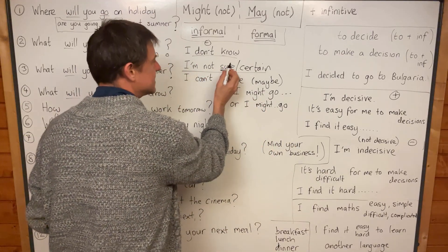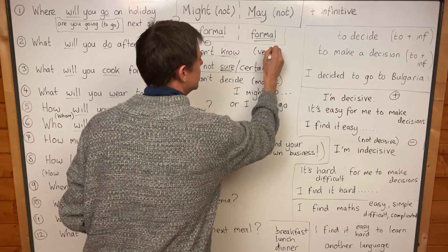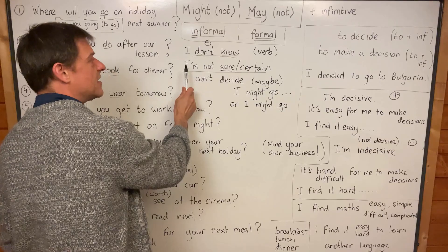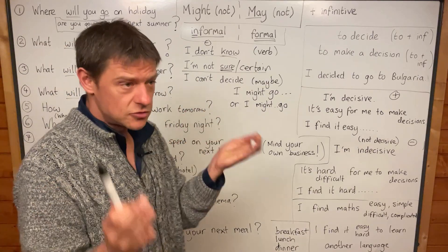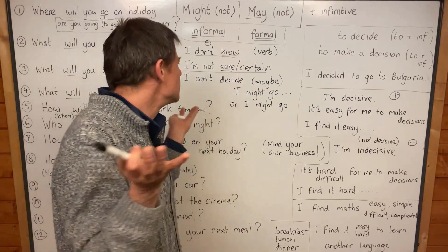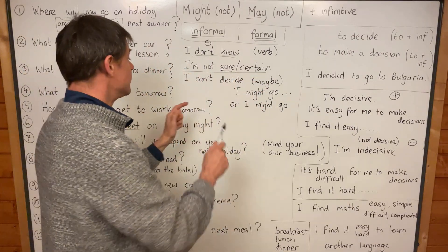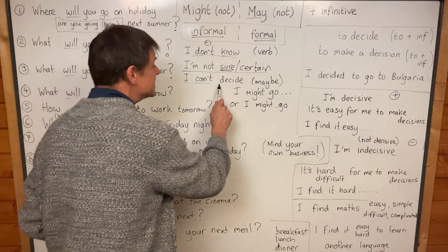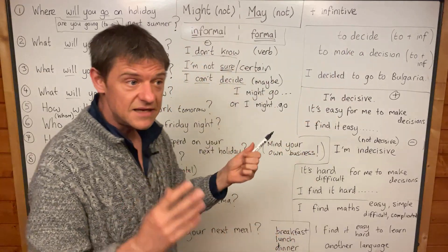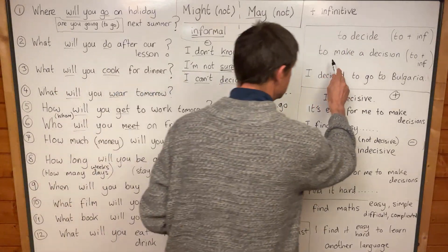Sure is an adjective, which is why it's I am sure — a hundred percent, I know. Or I'm not sure, I don't know, I'm not certain. Also, I can't decide. Decide means to choose, to make a decision.